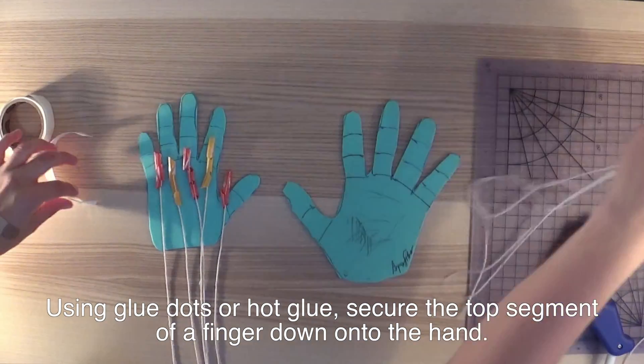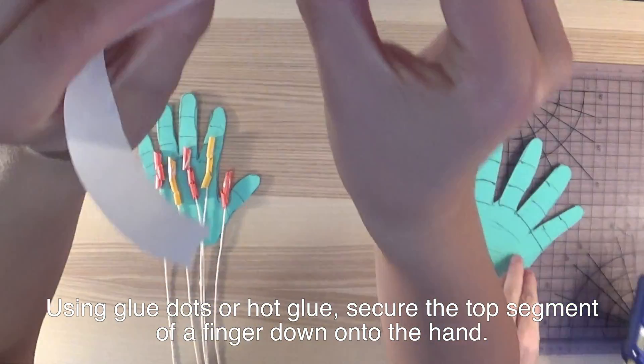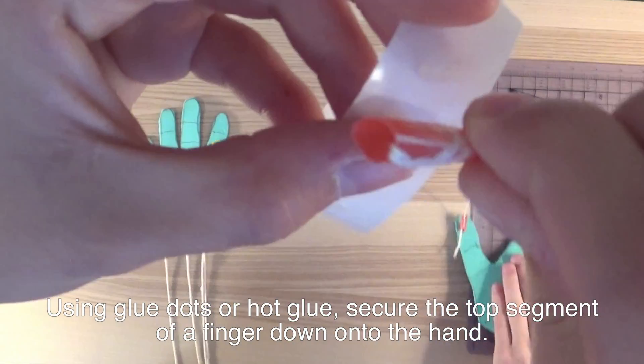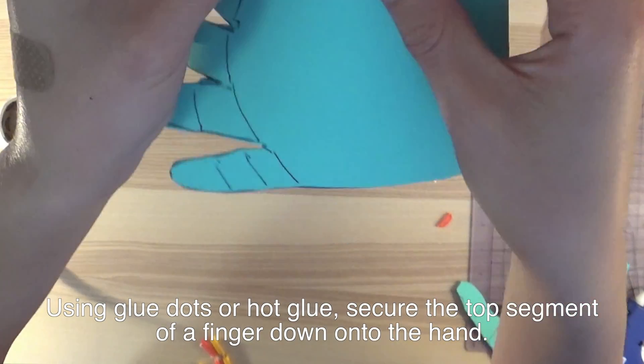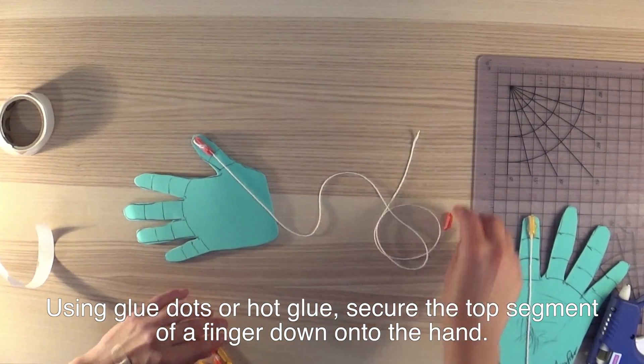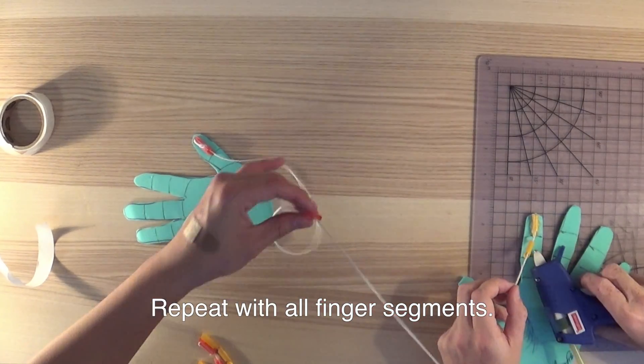Using glue dots or hot glue, secure the top hand segment of a finger down onto the hand. Use hot glue with caution as it is extremely easy to burn yourself. Repeat with all finger segments.